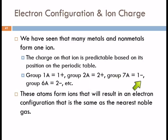Group 7A forms a 1 minus ion because it needs to gain an electron. Group 6A minus 2 because it needs to gain 2 electrons.